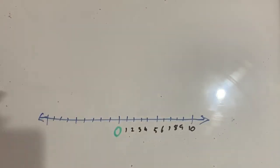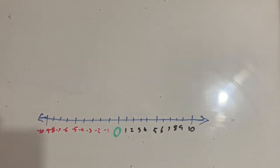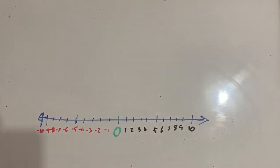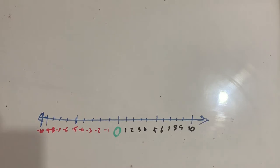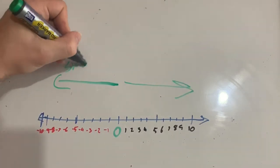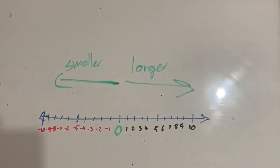To the left we have negative numbers, or numbers that are smaller than zero. It looks a little bit reflected — 10 is bigger than five, and five is bigger than zero; or negative 10 is smaller than negative five, and negative five is smaller than zero. The further to the left we go the smaller we get, and the further to the right we go the larger we get. Whenever we imagine negative numbers it's helpful to think about a number line with zero in the middle.